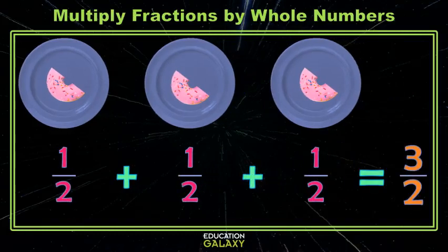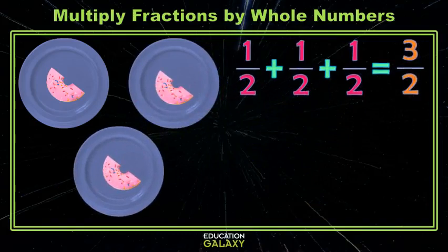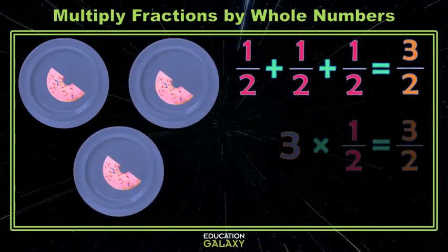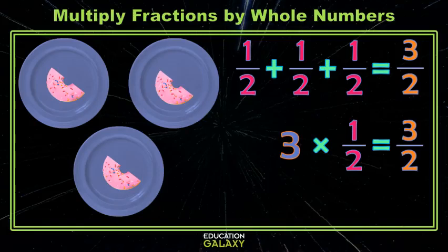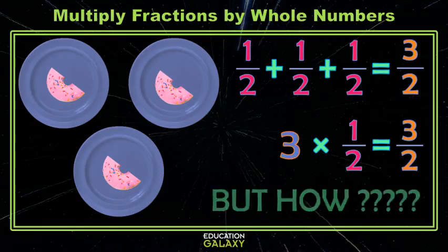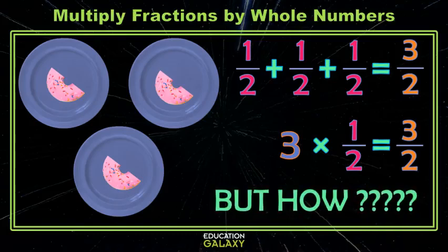Now, what you're all wondering is, can I still use multiplication? Yes, yes you can. Here I have three groups of one half. So I can say this is three times one half. And I still get the same answer. But you're wondering how? Well, we'll get to that. Let's try one more example.